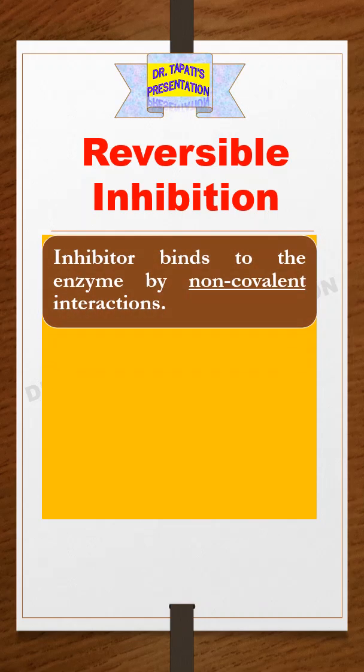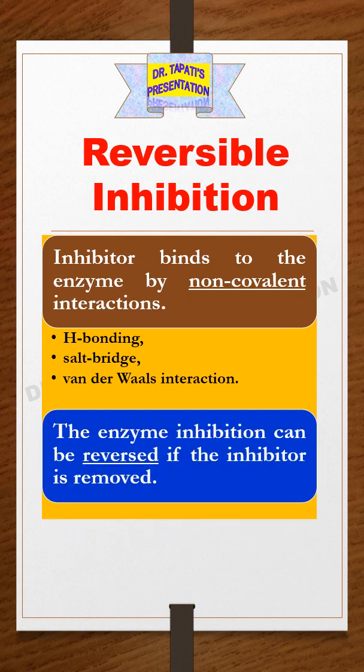In the reversible inhibition process, the inhibitor binds to the enzyme by non-covalent interactions. The enzyme inhibition can be reversed if the inhibitor is removed, therefore it is known as reversible inhibition.